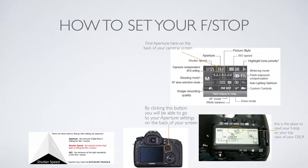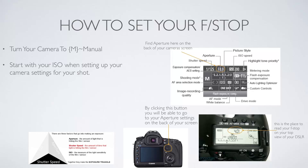How do we set up an f-stop on your camera? First, turn the camera to manual — that's the dial on top with options like TV, AV, M, and Bulb. Turn it to M for manual mode, then start with your ISO. Set up your shot based on how much light you need, go back to the first video on ISO to work that out, and then set your shutter speed — do you want to freeze the moment or have some motion in the shot?